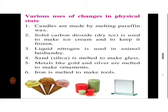Various uses of change in physical state: first, candles are made by melting paraffin wax. Second, solid carbon dioxide — dry ice — is used to make ice cream and to keep it frozen. Third, liquid nitrogen is used in animal husbandry. Fourth, sand — silica — is melted to make glass. Fifth, metals like gold and silver are melted to make ornaments. Sixth, iron is melted to make tools.